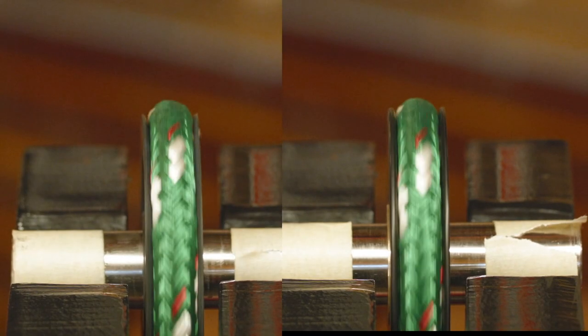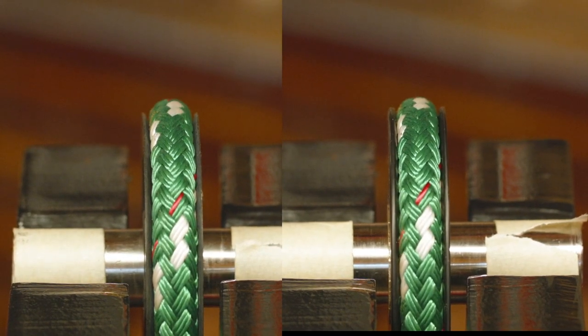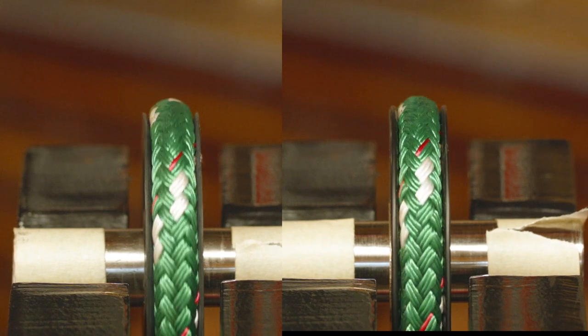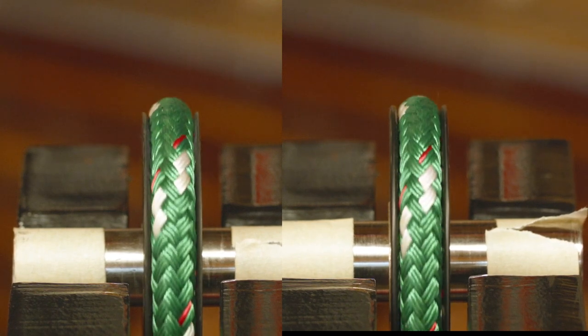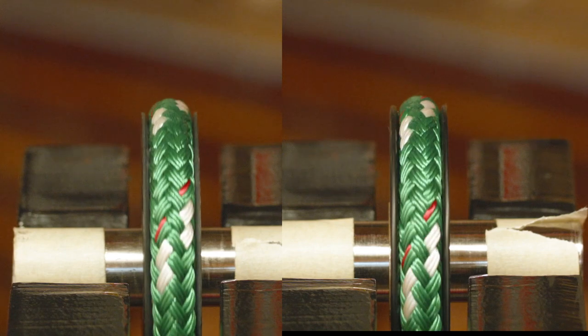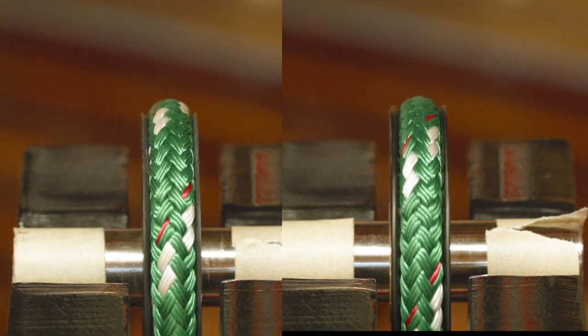Here are the two sheaves operating under load. The new sheave on the right cradles the line much better than the older one on the left. They are also substantially smoother to operate.